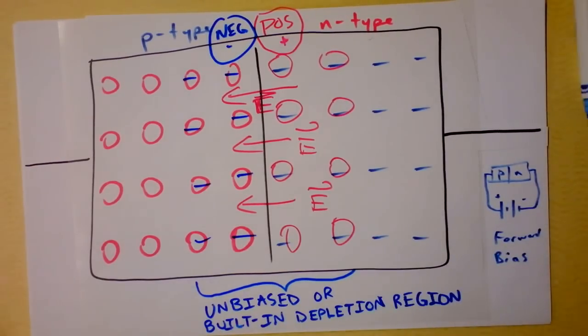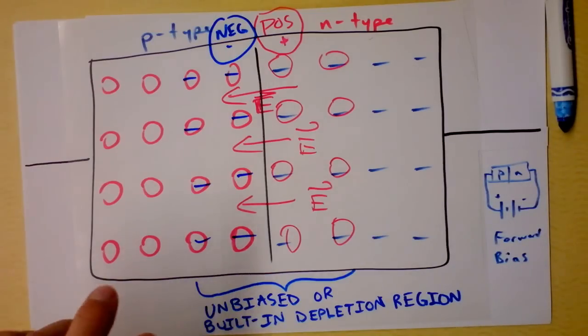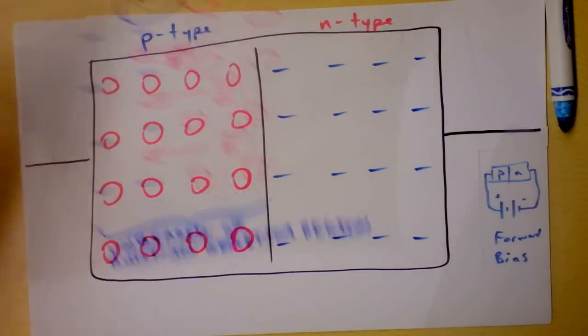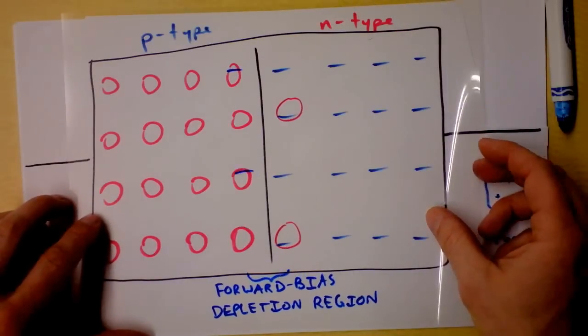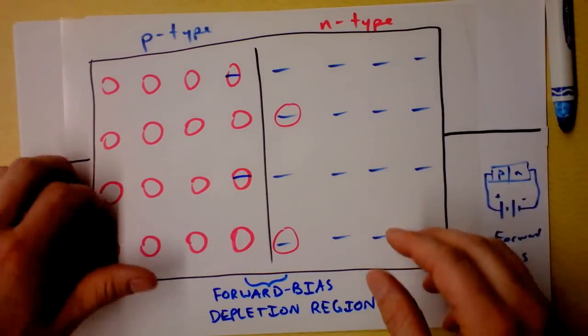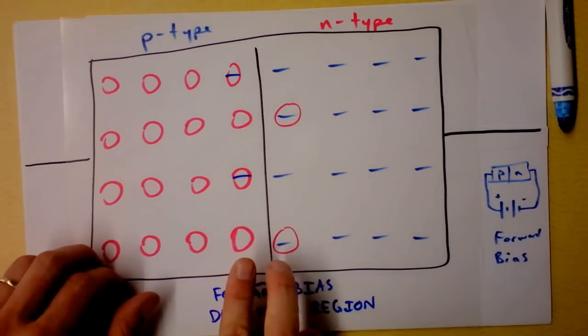During a forward bias, we actually get the situation where far fewer of the free charge carriers are able to migrate to the other side. So the depletion region is very, very small.